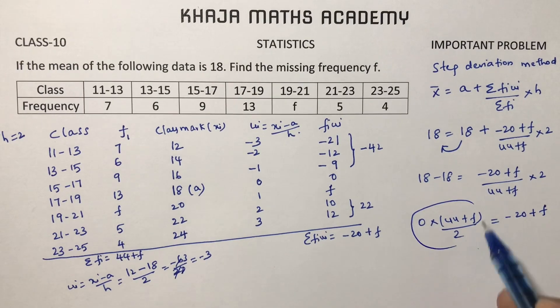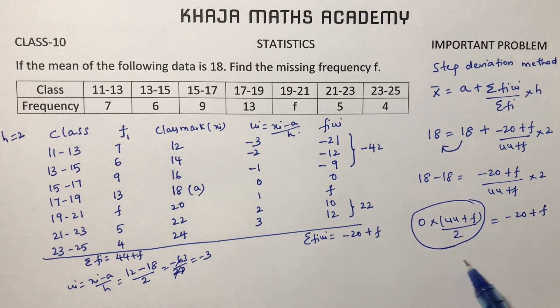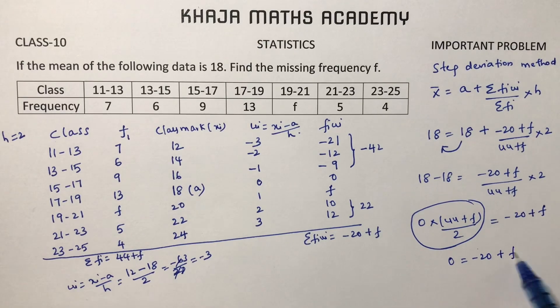0 into 44 plus F by 2 is minus 20 plus F. This total will become 0. 0 into anything is 0. 0 equals minus 20 plus F.